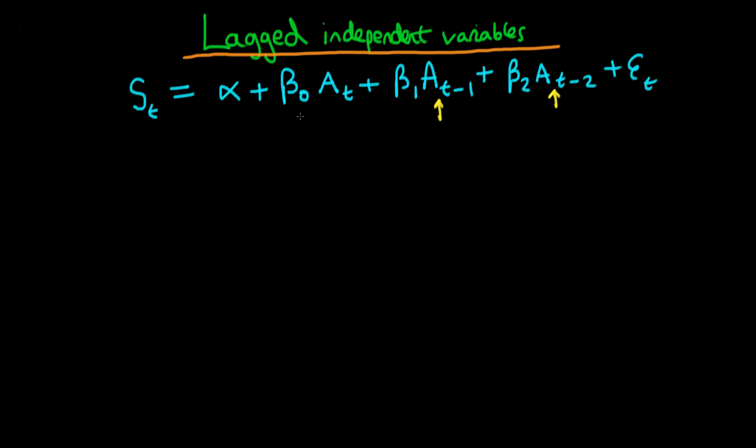Let's start with beta naught. Beta naught tells us how much, if advertising was to go from some amount which was fixed, A bar, to some amount, let's say A bar plus 1, beta naught tells us what is the instantaneous effect of that change in advertising spend. And because of that we call beta naught the impact parameter because it shows the instantaneous impact of a change in the independent variable.